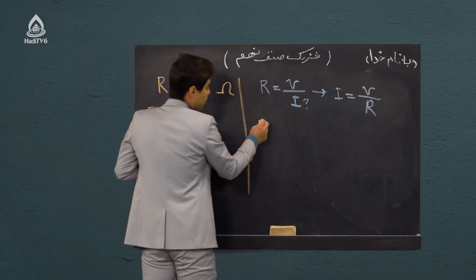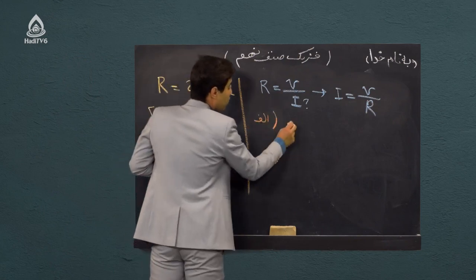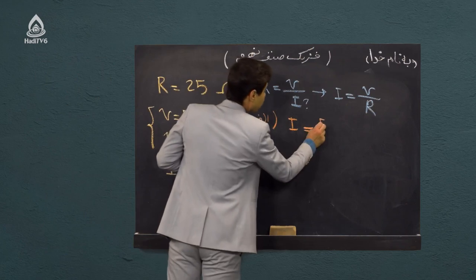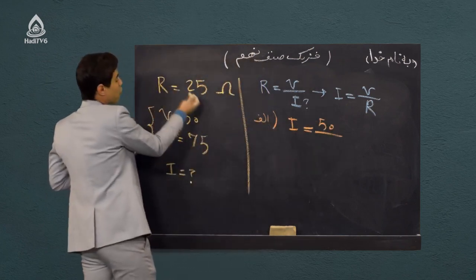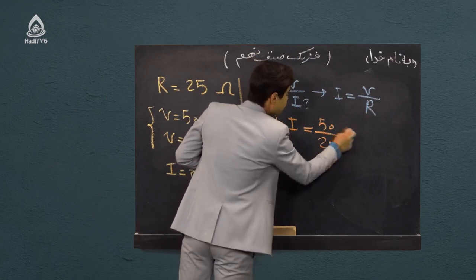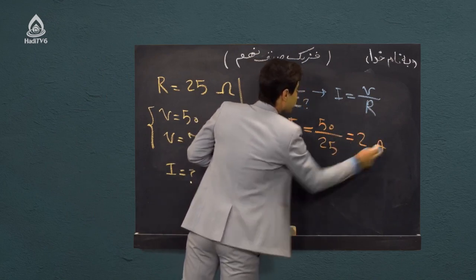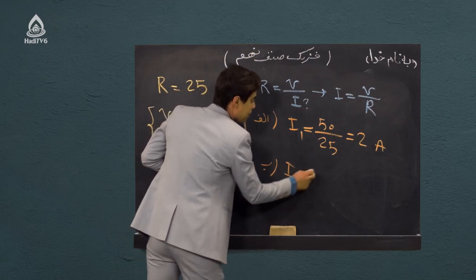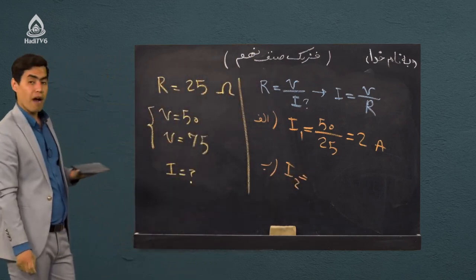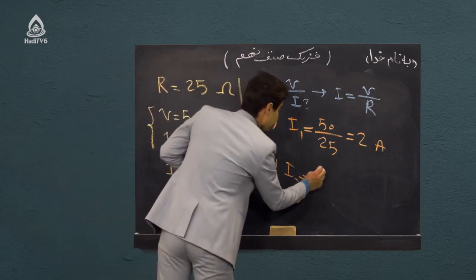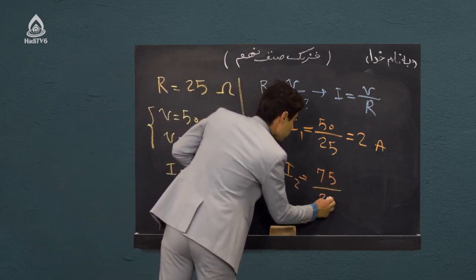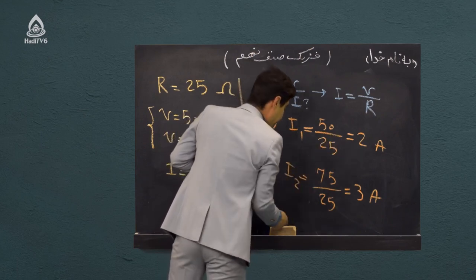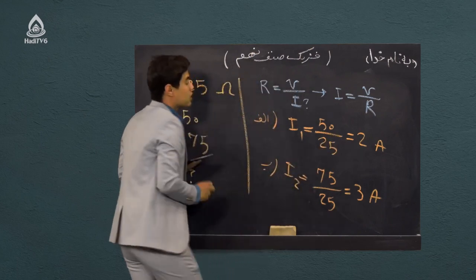قسمت الف: I₁ = V/R = 50/25 = 2 امپیر. قسمت ب: I₂ = V/R = 75/25 = 3 امپیر. پس I₁ شد 2 امپیر و I₂ ما شد برابر با 3 امپیر.